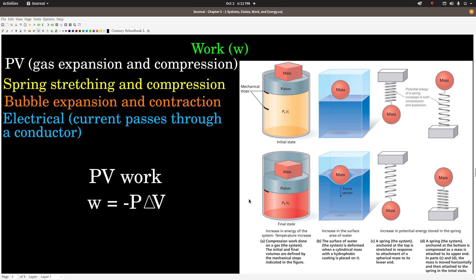Gas expanding or contracting, bubble expansion and contraction - we're not going to really talk about this too much, but this is basically what we call surface tension. I'll leave it like that. And electrical work - this is when a current, electric current, passes through a conductor, and again we're not going to worry about that too much.